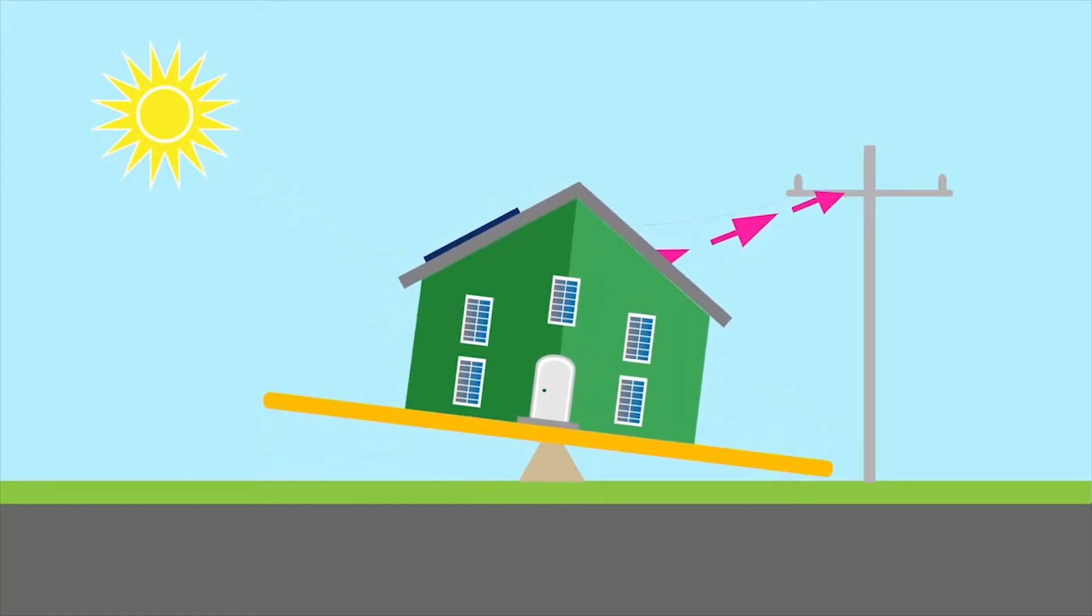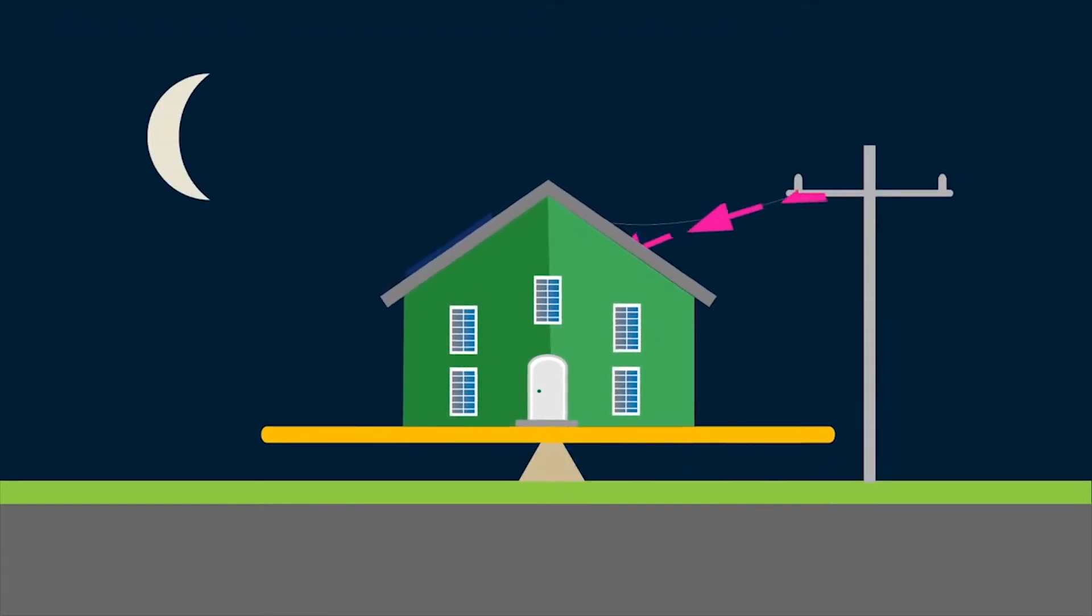Over the course of a year, the energy supplied to the grid balances the energy drawn from the grid. This is what we call net-zero energy.